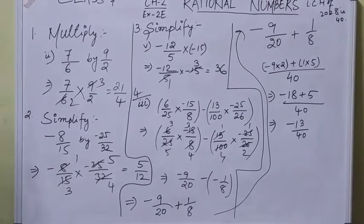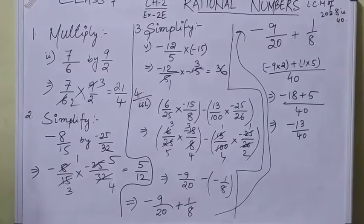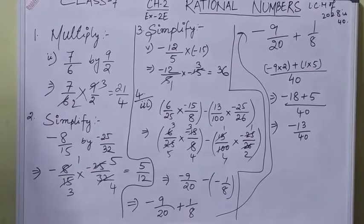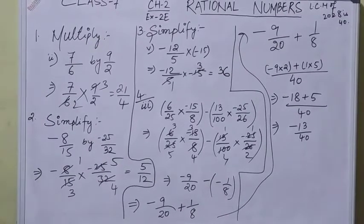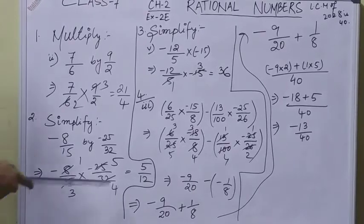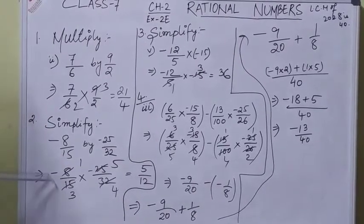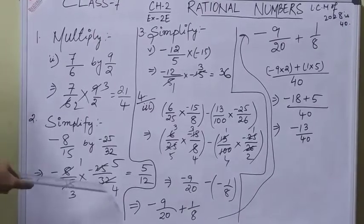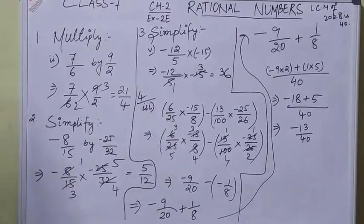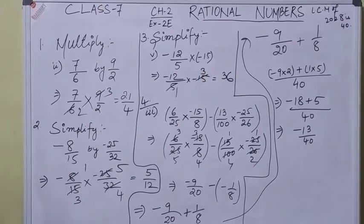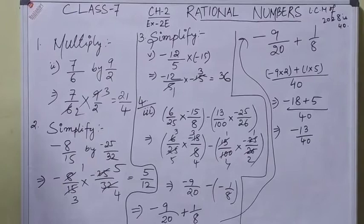8 ones are 8, 8 fours are 32. So your answer will be 5/12. Since we have a negative sign here and a negative sign here, minus minus becomes positive. This was a simple sum explaining how to multiply fractional numbers.